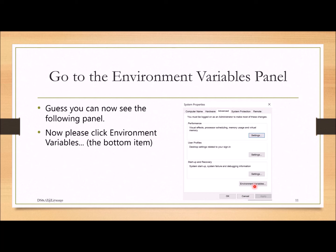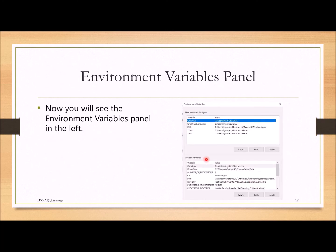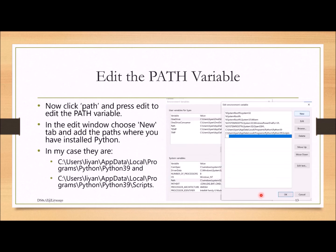Once you press Environment Variables, a panel appears showing User Variables and System Variables. You need to change the PATH — select Path from the list and press Edit. This will open a new window where you can edit the PATH variable.